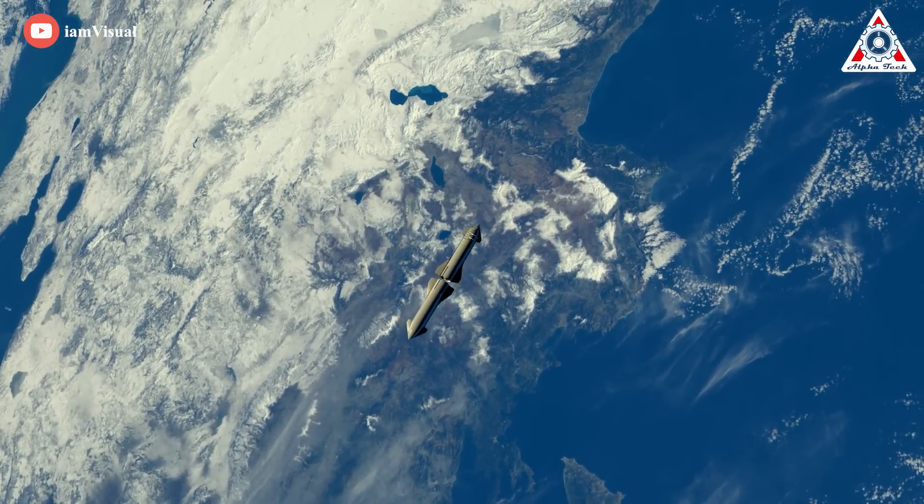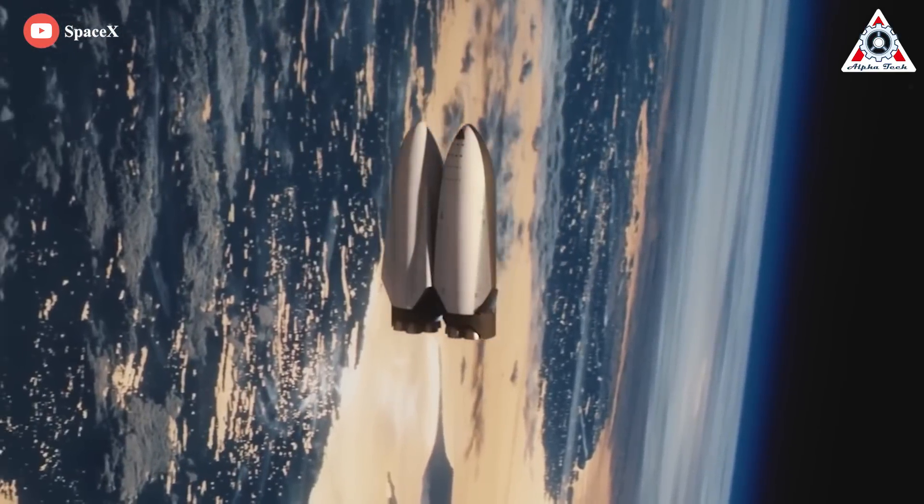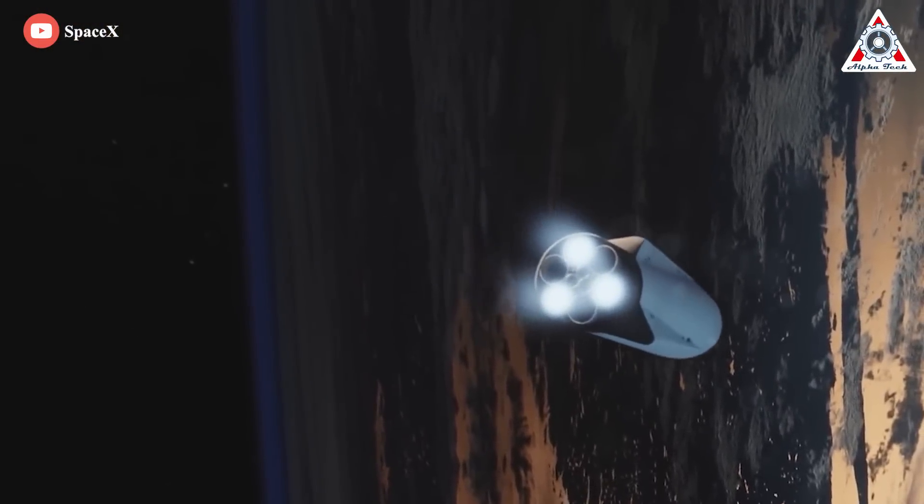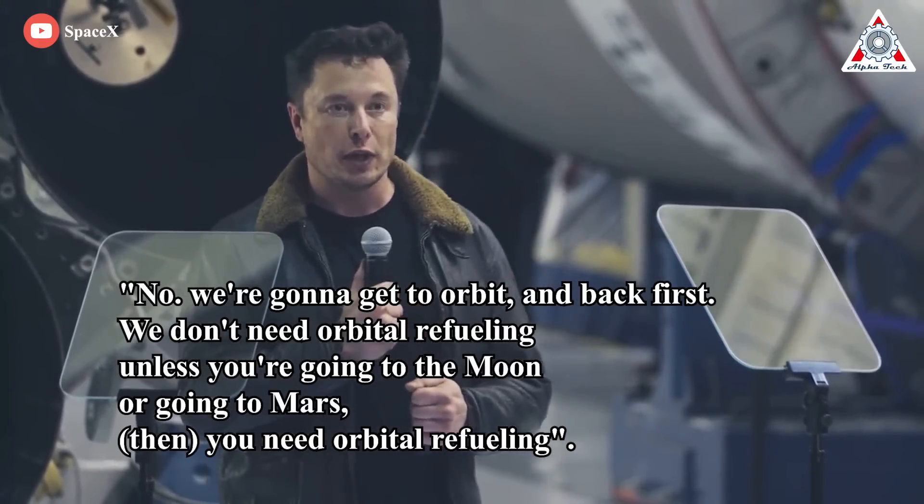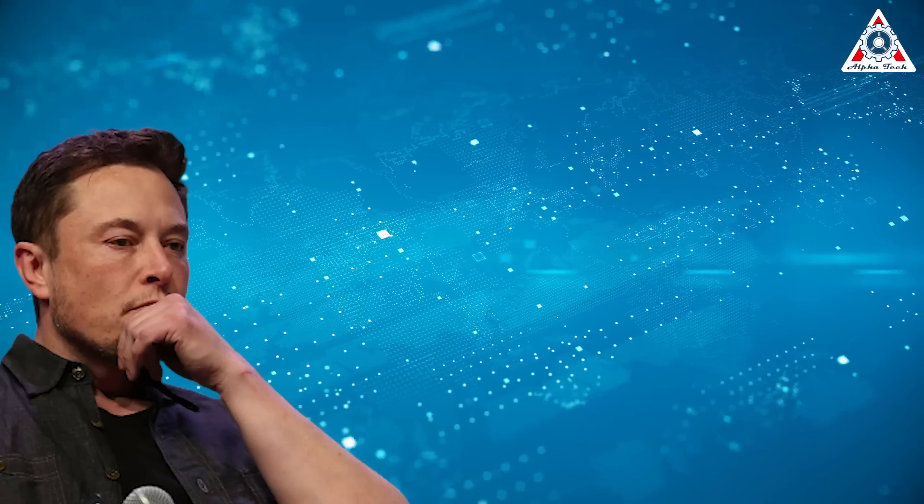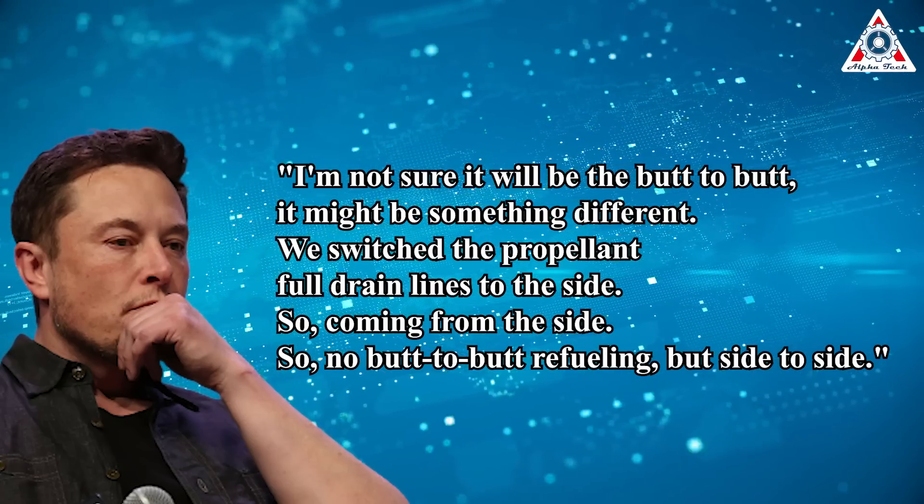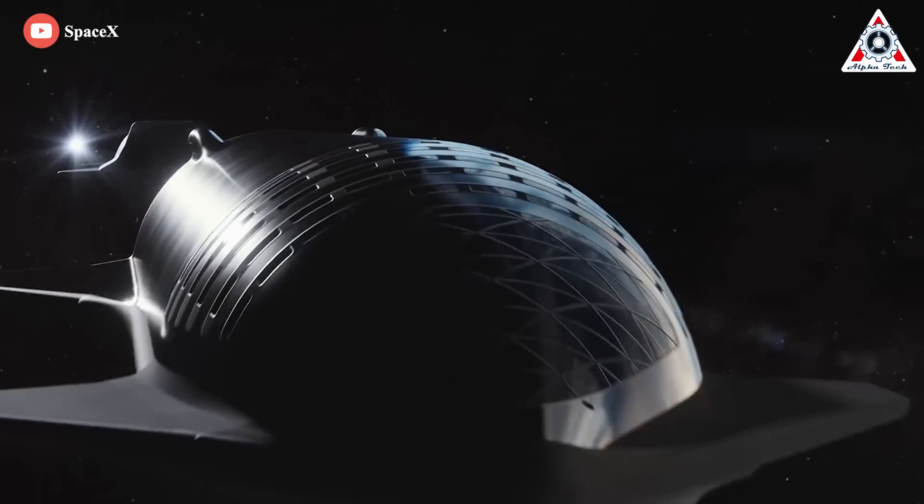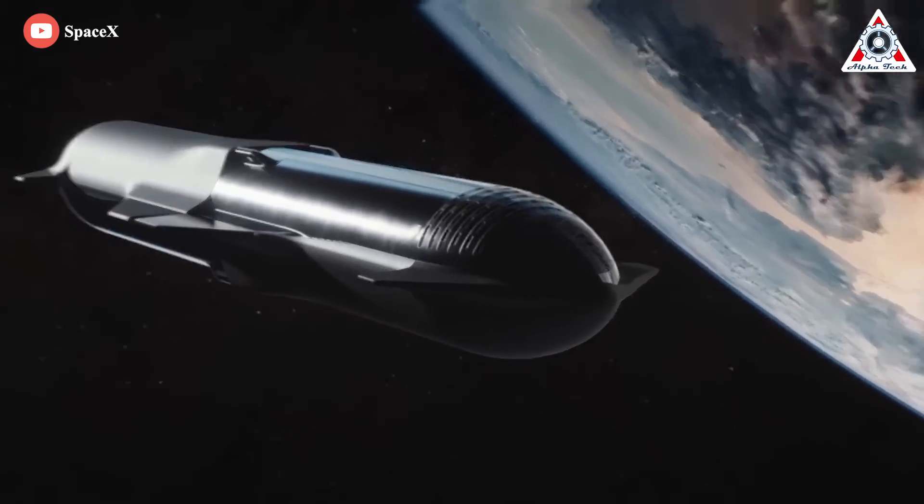Even though SpaceX and its executives have never detailed their approach to refueling Starship in space, in an interview last year, Elon was asked about the butt-to-butt refueling in orbit. To which he responded, no, we're gonna get to orbit and back first. We don't need orbital refueling unless you're going to the moon or going to Mars. Then you need orbital refueling. And he also said, I'm not sure it will be the butt-to-butt. It might be something different. We switched the propellant full drain lines to the side, so coming from the side, so no butt-to-butt refueling, but side-to-side. But one caveat here is that they still refuel through their skirts, kind of like the old butt-to-butt except using the new side skirt ports.